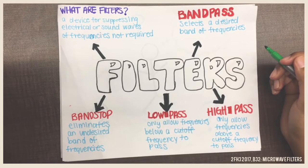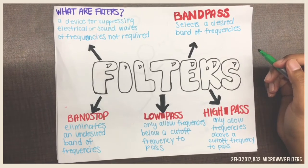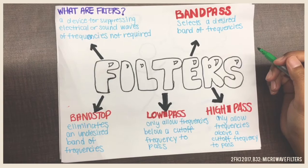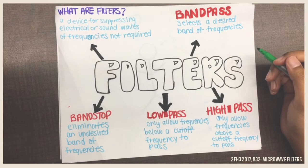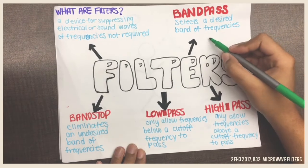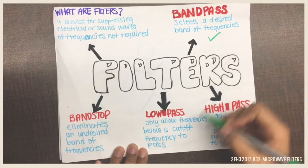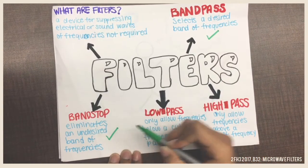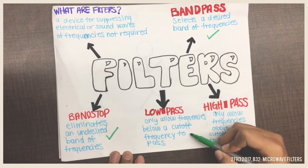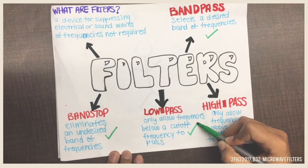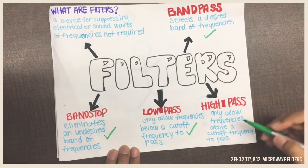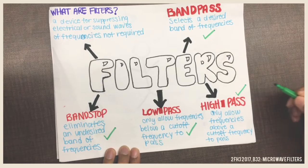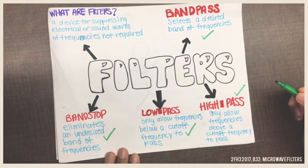Filters are devices that suppress electrical or sound waves of frequencies that are not required. There are four main types: band pass, which selects a desired band of frequencies; band stop, which eliminates an undesired band of frequencies; low pass, which only allows frequencies below a cutoff frequency to pass; and high pass filters, which only allow frequencies above a cutoff frequency to pass.